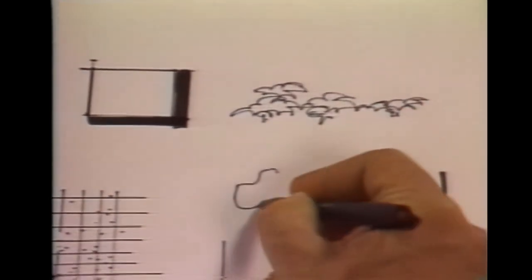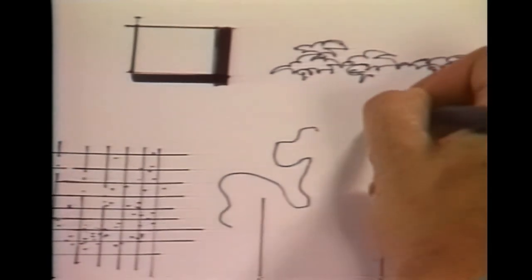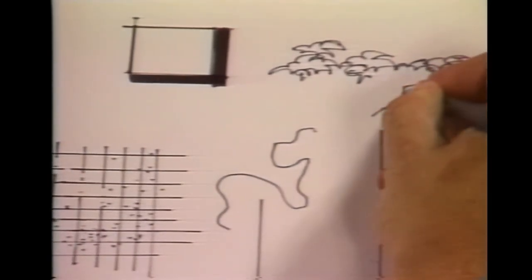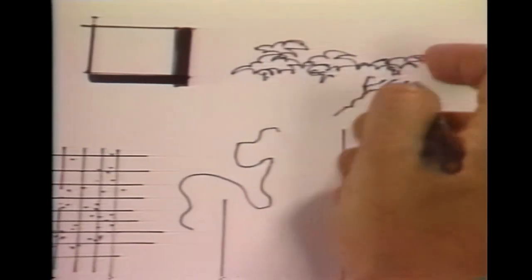Notice that very few of these lines are squiggly lines, like so. But they have definite turns and corners, somewhat like the way a tree grows.